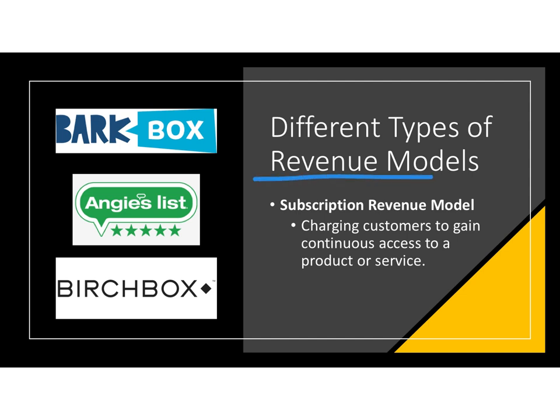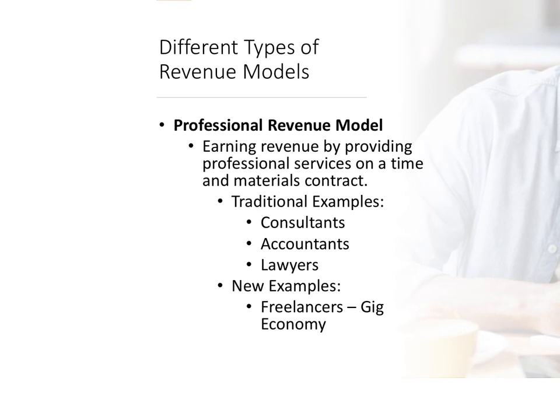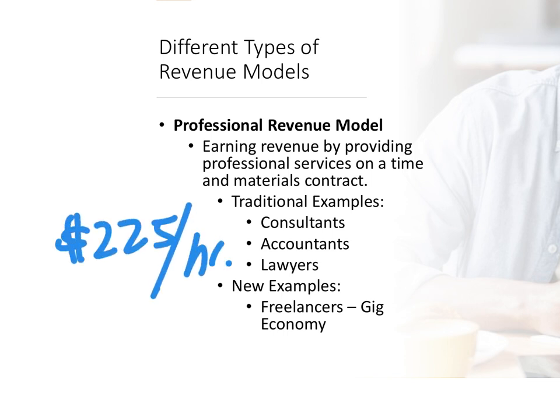The subscription revenue model is still here and still works. If you're selling a product, look at whether you can translate that into a subscription as an additional revenue stream. The professional revenue model applies to attorneys, tax professionals, or financial advisors paid by the hour — for example, charging $225 per hour. That is a professional revenue model, typically billed per hour.